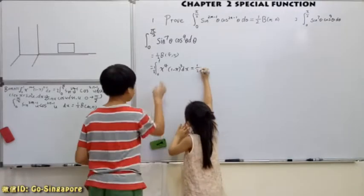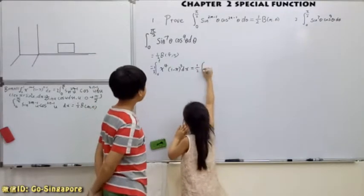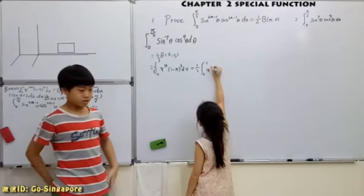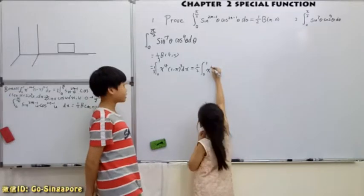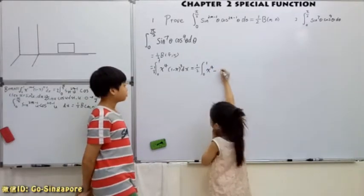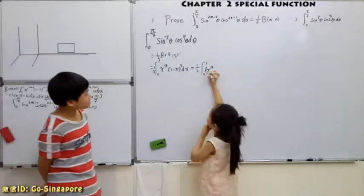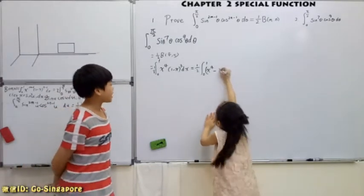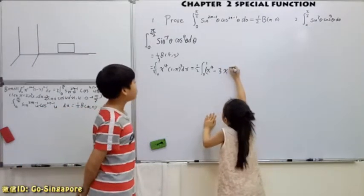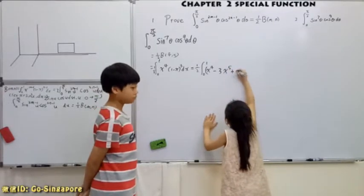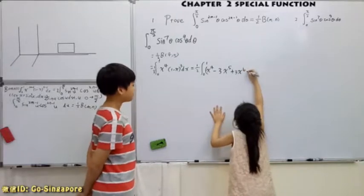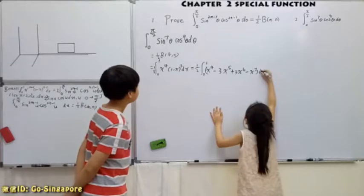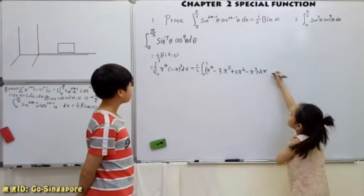Last time, we proved that these two can reverse. So now you can expand this. Are you trying to times this in? Yes. At the second term, that is 3x.